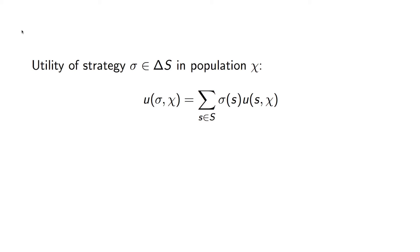What we need to consider is the utility of a strategy. The utility of a mixed strategy in a population chi is given by this expression here — we sum over all pure strategies and simply weight by the utility of that pure strategy within a population.